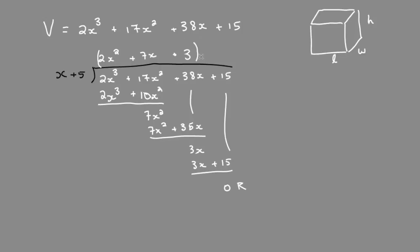Now we take our quotient and factor that. What two numbers multiply to 6 and add to 7? 6 and 1. We'll factor by grouping. Common factor, group.